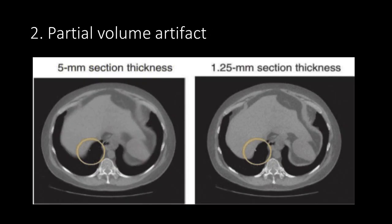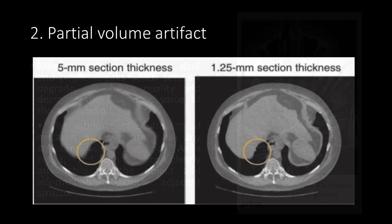In this patient, we can see partial volume artifact, circled in yellow, decreases with thinner slices.